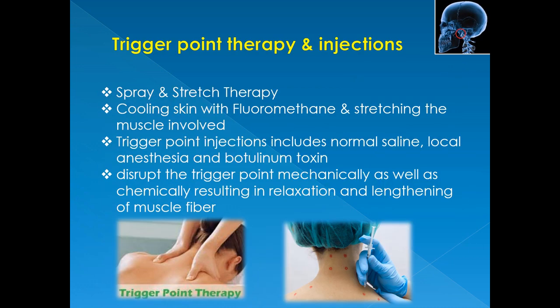There is also trigger point therapy and injections for MPDS. In trigger point therapy, also called spray and stretch therapy, we spray a vapor coolant like fluoromethane over the involved muscle in the direction of the referred pain pattern, immediately followed by a general stretch of the muscle. This can be repeated until full muscle length has been reached. Trigger point injection uses normal saline, local anesthesia, and botulinum toxin. These injections disrupt the trigger point mechanically and chemically, resulting in relaxation and lengthening of the muscle fiber. The injected solution causes vasodilation, resulting in dilution and removal of the accumulated chemicals through diffusion.